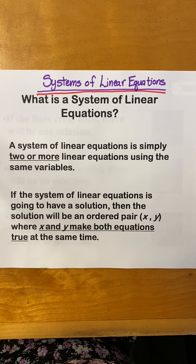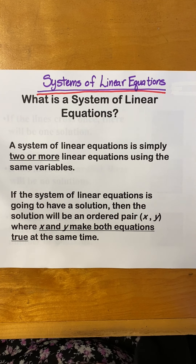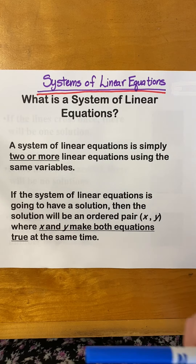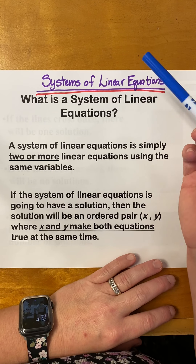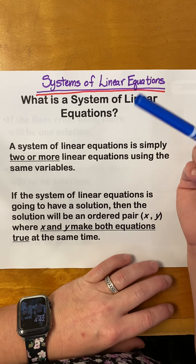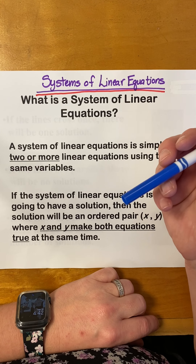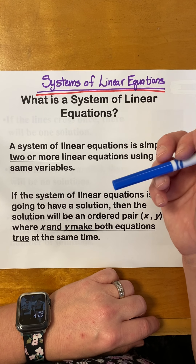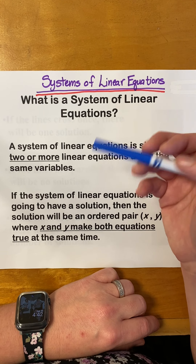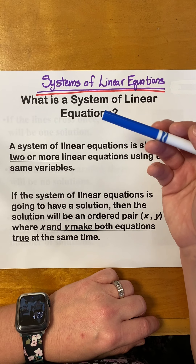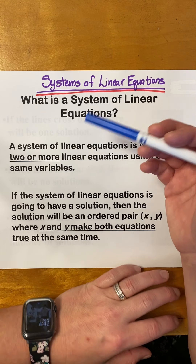Today we're going to talk about systems of linear equations. All that is is two or more linear equations that have the same variables. In our cases, generally they both have an x and a y. However many variables you have, that's how many equations you have to have in the system.